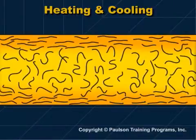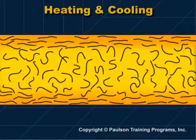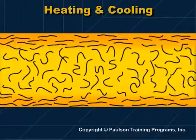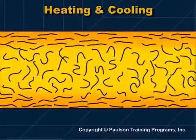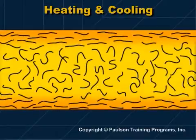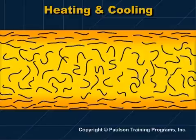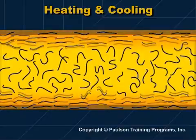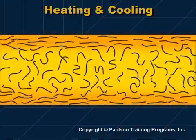Heating and cooling of the plastic sheet has two effects. When the plastic is heated, it expands — the molecules move further apart. When the sheet is cooled, it shrinks — the molecules move closer together.